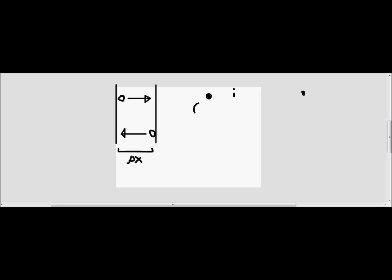In our givens for this problem, the distance converts to meters, so the change in x is 0.05 meters, and the electric field is 12,000 newtons per coulomb. There is a positive plate and a negative plate — on the positive plate there's a proton, and on the negative plate there's an electron. We're supposed to find which particle reaches the other plate first and how much sooner it arrives.